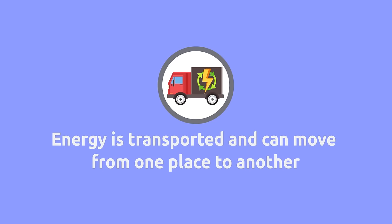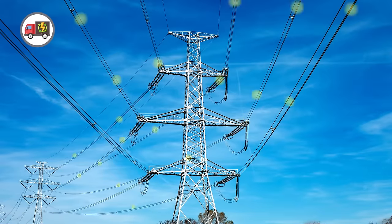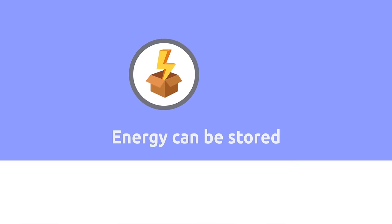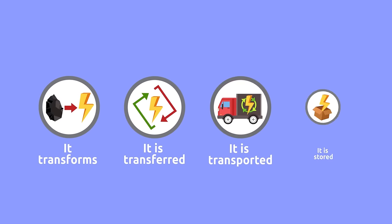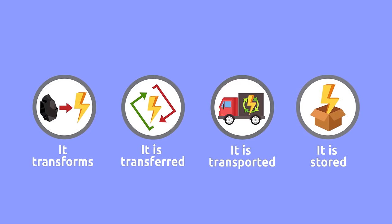Third, energy is transported and can move from one place to another — this is how energy travels through electric cables and reaches our houses. Fourth, energy can be stored — for example, mobile phone batteries are used for storing energy. To recap: energy transforms, is transferred, and can also be transported and stored.